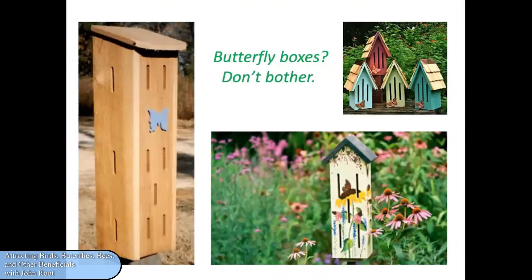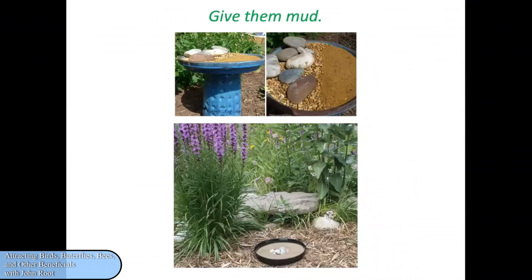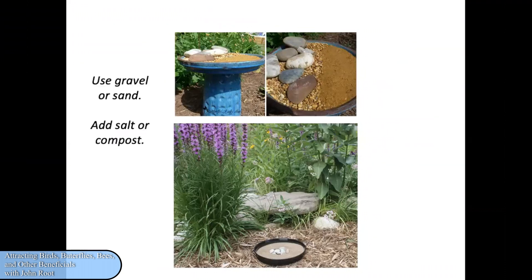Don't bother with butterfly boxes — no one has ever found a butterfly in a butterfly box. Spiders and wasps yes, but never a butterfly. But if you provide mud, they might come. Male butterflies engage in 'puddling' — sipping mud for the minerals, which help them produce pheromones that attract females. When they mate, they're able to donate those minerals to the eggs, making the eggs more fertile. We can give butterflies mud by using a repurposed bird bath or a saucer nestled in the ground filled with gravel or sand. If you add salt or compost, you'll make sure those minerals are there. Keep it moist for the butterflies. You might also want to try offering fruit to butterflies — fruit that's turning and no longer edible for humans, but butterflies will eagerly help themselves.